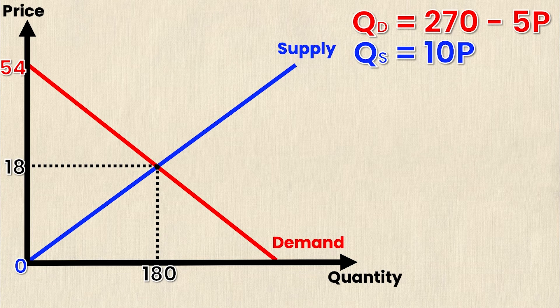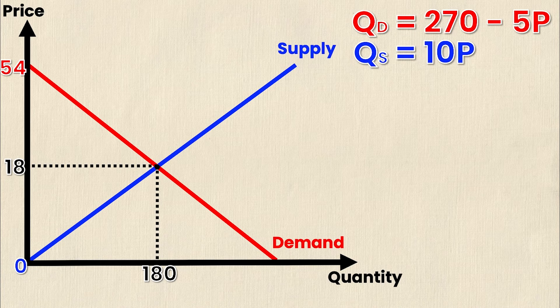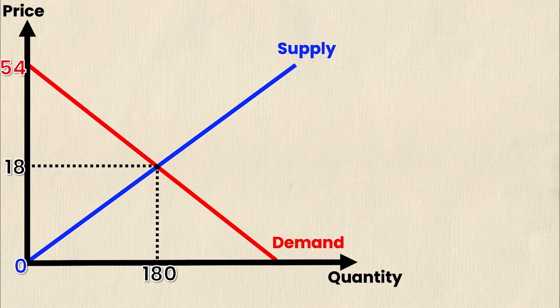So now that everything's labeled we're on to our final step and that is actually using these four points to calculate consumer surplus and producer surplus. As for the supply and demand equations well now that we've used them to calculate these four values we no longer need them anymore.